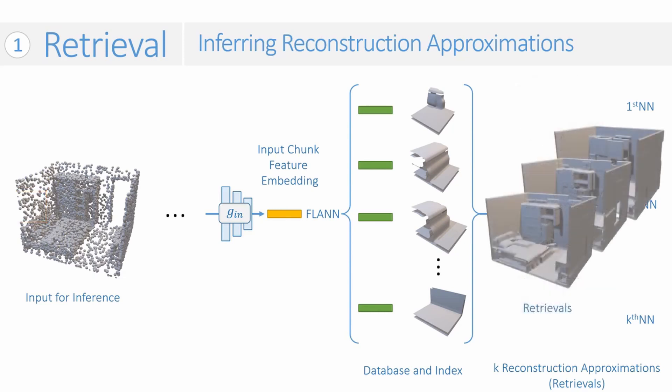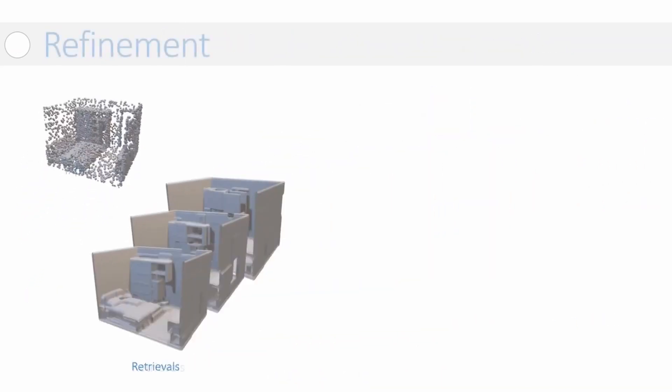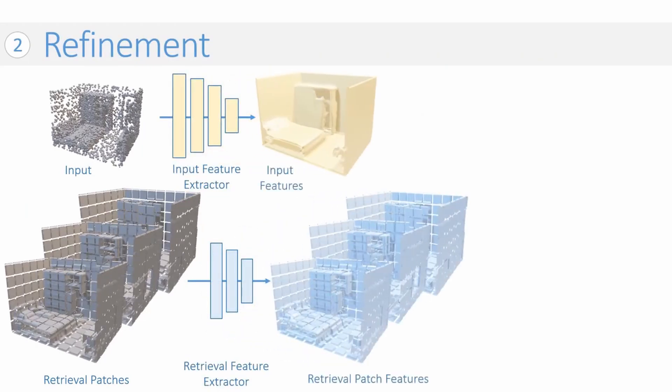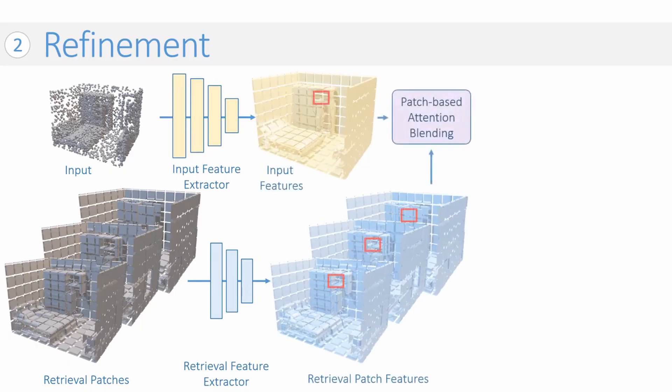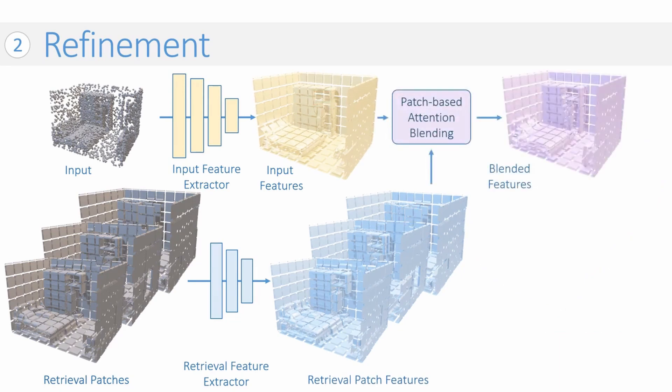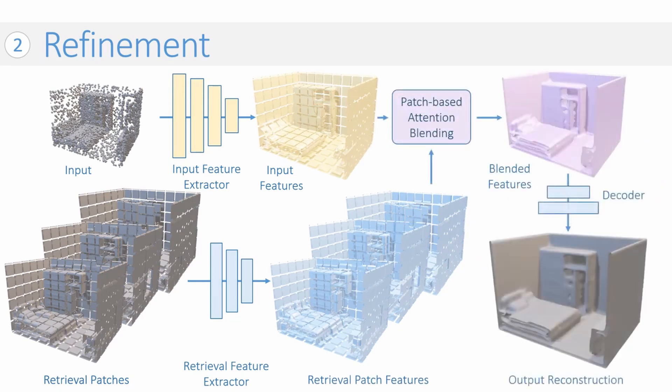We then refine these initial estimates. We extract features from input and retrieved patches, and then use an attention-based blending to learn to select and blend retrieved patch features and input patch features based on feature similarities between spatially corresponding patches. The blended feature grid is finally decoded to output the reconstructed geometry.